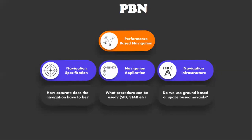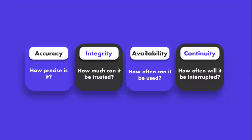Performance-based navigation is area navigation plus specific performance requirements. Its three main pillars are: navigation specification — what is our required navigation performance and how accurately do we need to navigate; navigation application — what kind of procedure can actually be flown; and navigation infrastructure — are we using satellites, ground beacons, or other systems to aid navigation. Required navigation performance is a navigation specification used in aviation to define the accuracy, continuity, availability, and integrity requirements for a specific phase of flight or airspace, enabling more efficient and predictable flight operations.